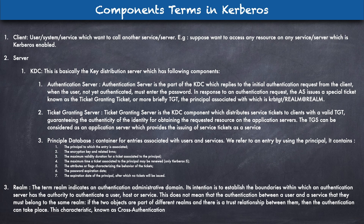Then we have a Realm — which is essentially a domain name. Suppose you have a LAN or a domain name range and you want resources to be available only within it — like google.com or example.com. That can be a realm. A user with a user ID like 'user@this.com' would be authorized to access resources within that realm. We also have cross-authentication.